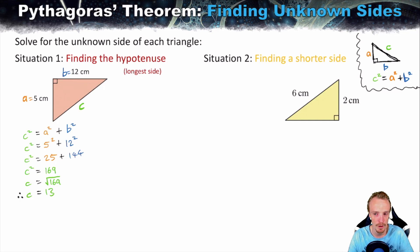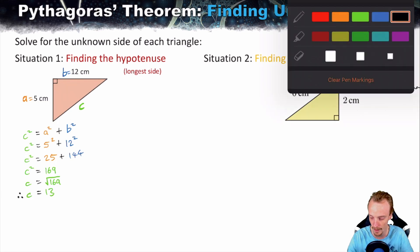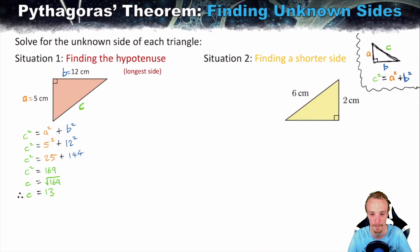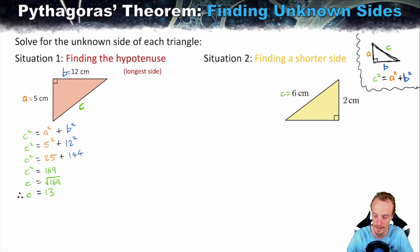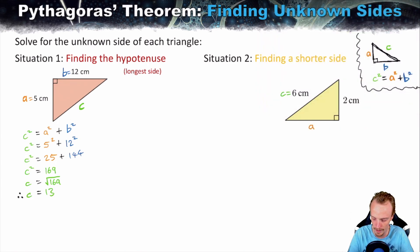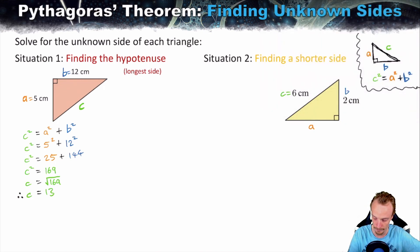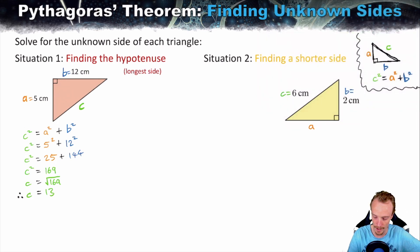Now let's move to situation two: what if we're not after the hypotenuse? What if we know the hypotenuse and instead want one of the shorter sides? Step one is still to label the triangle — C must be the hypotenuse, which is opposite the right angle, so C is 6 centimetres. I'll label A as the unknown side and B as the known shorter side, which is 2 centimetres.